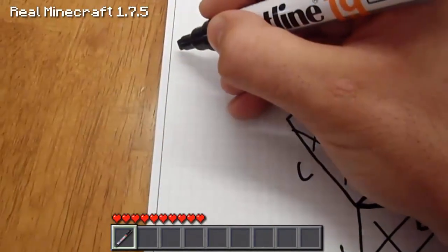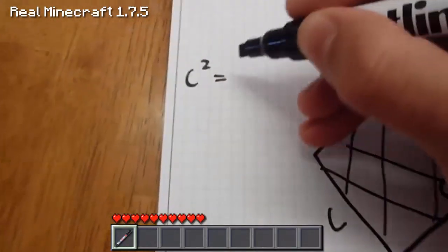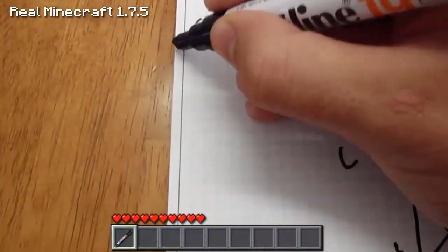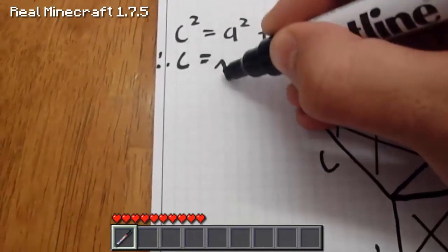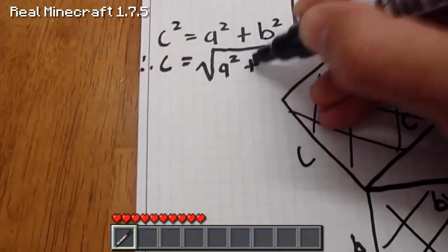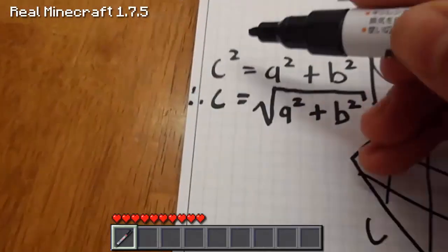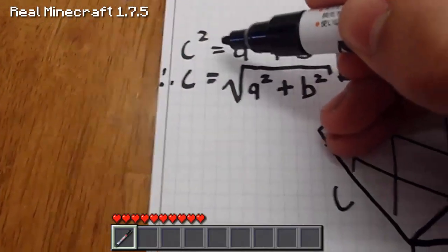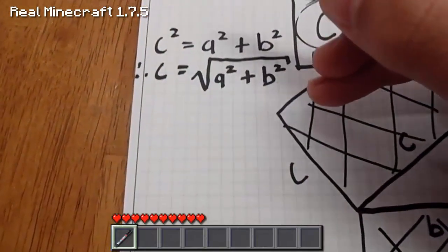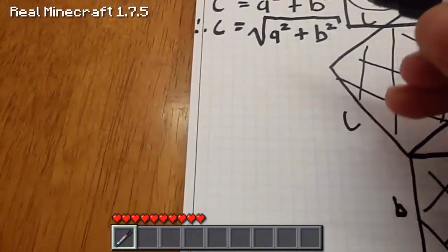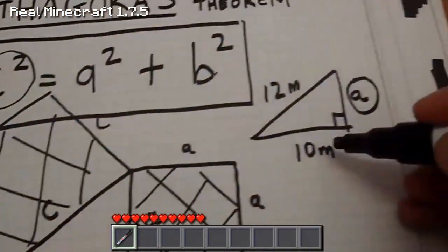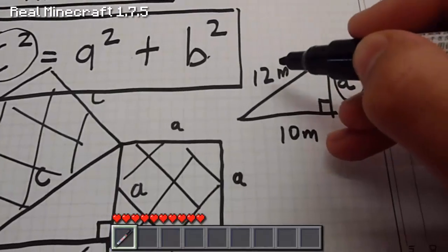So first of all, C squared equals A squared plus B squared. Therefore, through algebra, C equals the square root of A squared plus B squared. That's simply taking the square root over to the other side of the equal sign, which basically means you have to square root. So that's the equation for C - if I know A and B, I can work out what the hypotenuse of the triangle is.